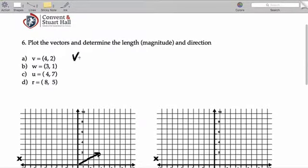To get the length of the vector, that's going to be 4 squared plus 2 squared.